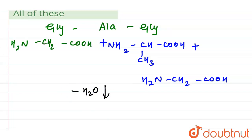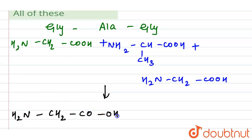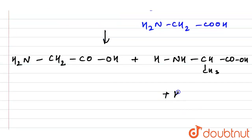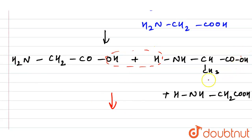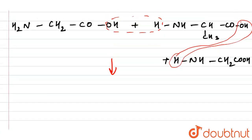Now we will have minus H2O to form the peptide bonds. So the first peptide bond forms between glycine and alanine: H2N-CH2 connects via a peptide bond. One water molecule is removed from each junction. This gives us H2N-CH2 linked to the alanine unit with CH3, and then linked to the final glycine with CH2-COOH.